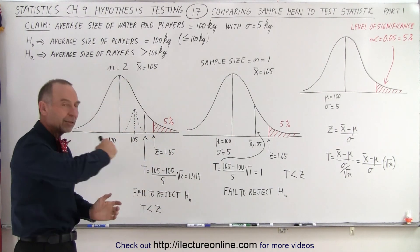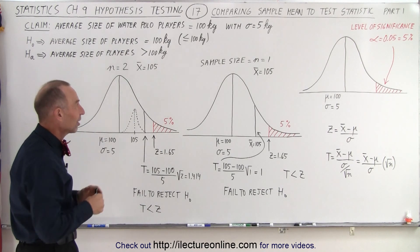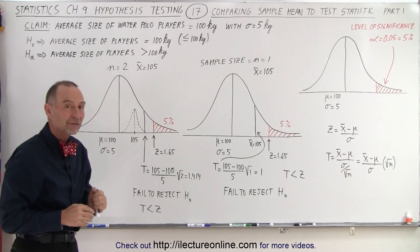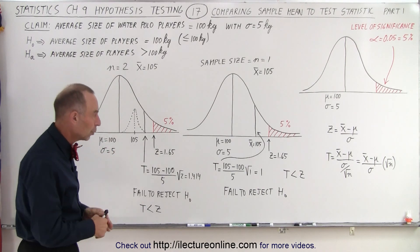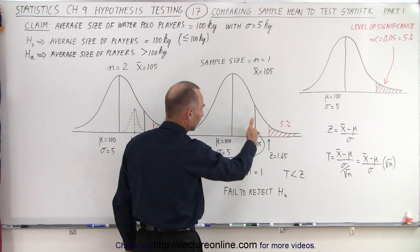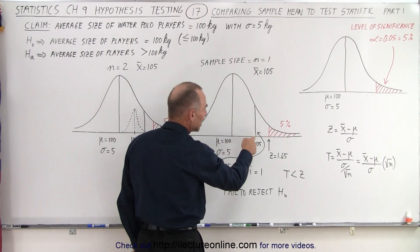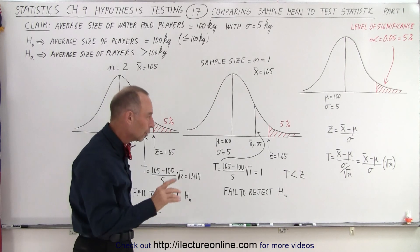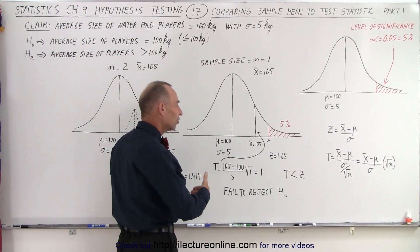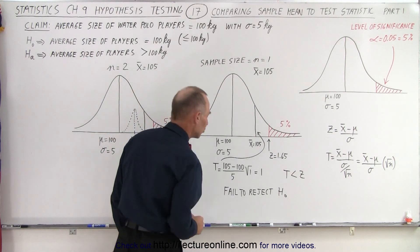What if we take one player at random and we measure the size of that player? That player is 105 kilograms. What do we conclude from that? Notice that the mean is going to be 105 kilograms. The mean is not inside the critical region, but that's not what we're going to check. We're going to check to see if the test statistic is in the critical region or not.